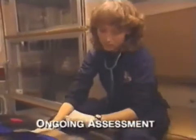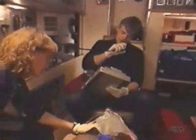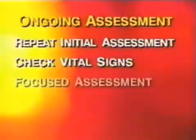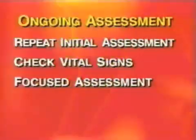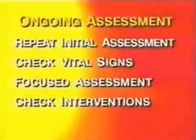Updated vital signs: pulse is 90, strong and regular; blood pressure 110 by palp; respirations 16. At any moment, a patient's condition may change. Your ongoing assessment will help identify changes in status. It is the final part of the patient assessment process. During the ongoing assessment, repeat the initial assessment, check vital signs, do another focused assessment checking areas already identified as a problem or injury, and check any interventions you began.